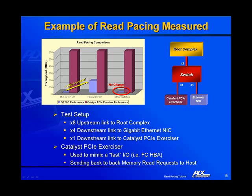The Catalyst exerciser is set up to mimic a fast I/O, sending multiple back-to-back read requests to the host, as seen in a Fiber Channel HBA. The Gigabit Ethernet NIC represents a slow I/O, as shown in the example on the previous slide.